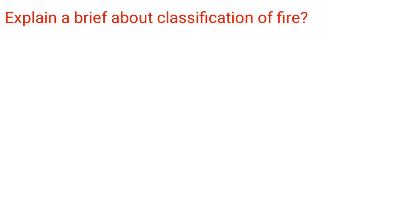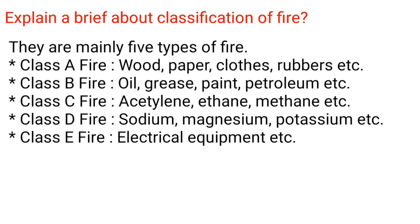Classification of fire: There are mainly five types. Class A: wood, paper, clothes, rubber. Class B: oil, grease, paint, petroleum. Class C: acetylene, ethane, methane. Class D: sodium, magnesium, potassium. Class E: electrical equipment.